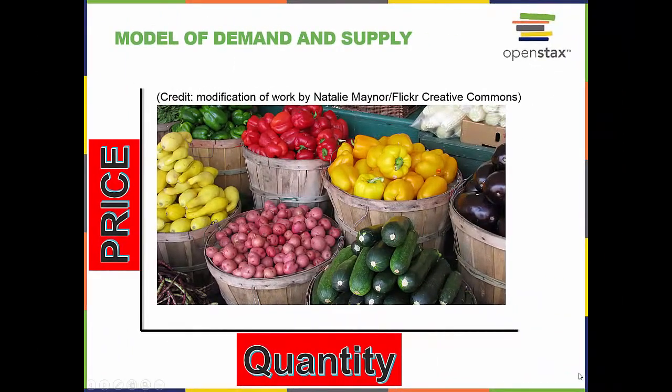This chapter introduces the economic model of demand and supply, one of the most powerful models in all of economics. The discussion here begins with examining how demand and supply determine the price and the quantity sold in the market of goods and services, and how changes in demand and supply lead to changes in prices and quantities.